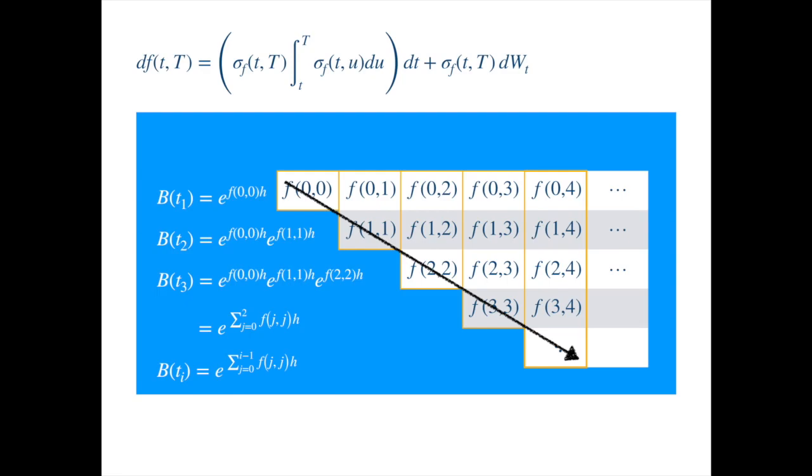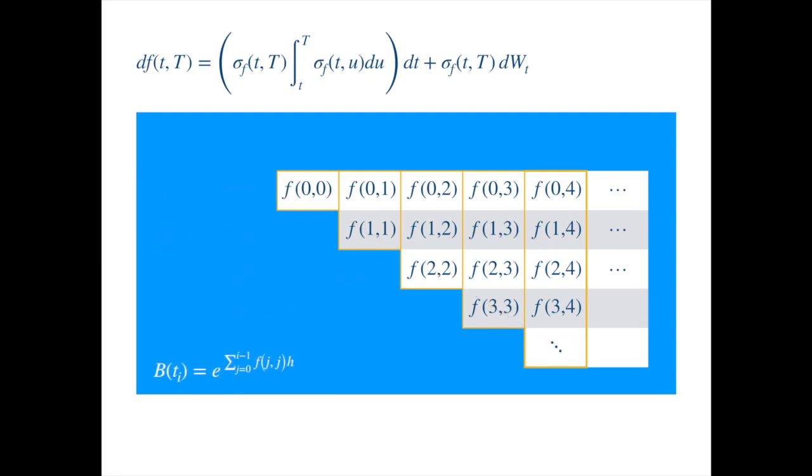For the zero coupon, let's say we want to calculate the price of a zero coupon that pays 1 quid at time t4. So we just discount the 1 quid using the 4 rates over the relevant intervals. And we can combine the exponentials. This summation is an approximation to the integral when the interval is divided into 4 sub intervals.